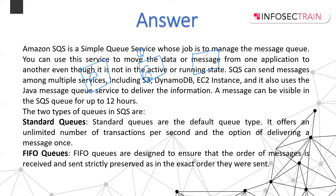The producer takes orders from users and sends messages to the queue. The queue stores these messages and sends them whenever the consumer polls for them, for example every 30-40 seconds. This is called a decoupled architecture. SQS can send messages among multiple services including S3, DynamoDB, and EC2 instances. It also uses the Java Message Queue Service to deliver information.